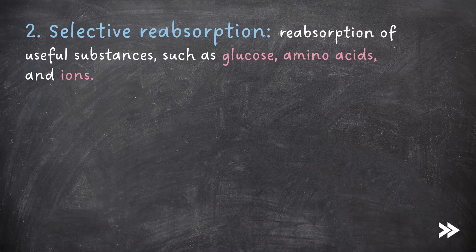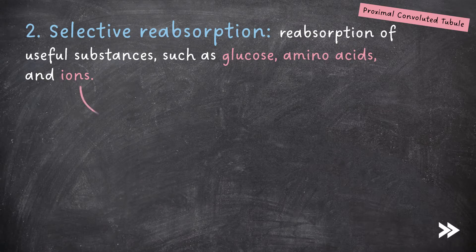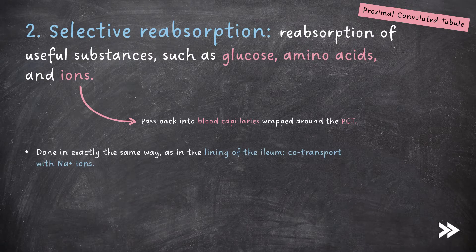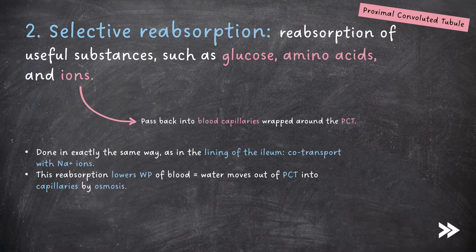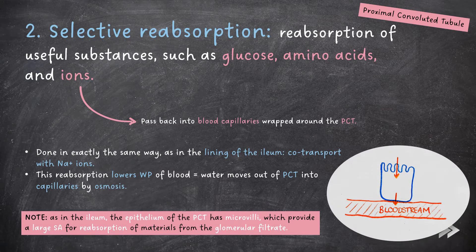Next we have selective reabsorption. This occurs at the proximal convoluted tubule. Here we have the reabsorption of useful substances such as glucose, amino acids, and ions. These pass back into the blood capillaries wrapped around the proximal convoluted tubule. This is done in exactly the same way as in the lining of the ileum, by co-transport with sodium ions. This reabsorption lowers the water potential of the blood, meaning that water moves out of the proximal convoluted tubule into the capillaries by osmosis. Note that, as in the ileum, the epithelium of the proximal convoluted tubule has microvilli, which provide a large surface area for the reabsorption of materials from the glomerular filtrate.